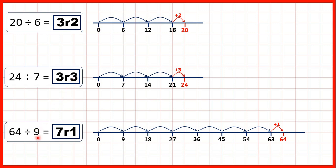Then for the last question, we needed to think of a number in the 9 times table that's as close to 64 as possible but not more than 64. That's 63, and because 7 times 9 is 63, we know we have a 7 before the remainder. From 63 we need to add 1 to get to 64, and that's why our remainder is 1.